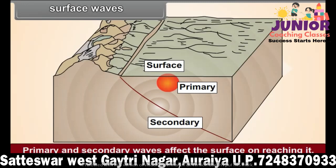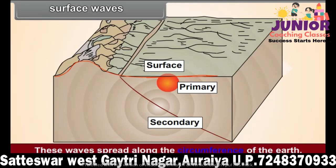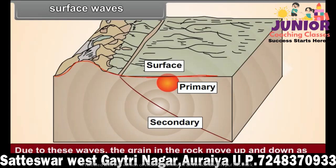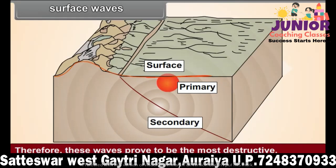Surface waves. Due to these waves, the grains in the rock move up and down, as well as sideways. These waves spread along the circumference of the earth. Therefore, surface waves prove to be the most destructive of all earthquake wave types.